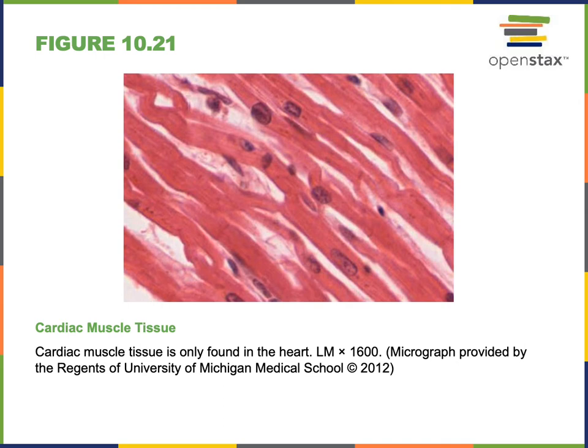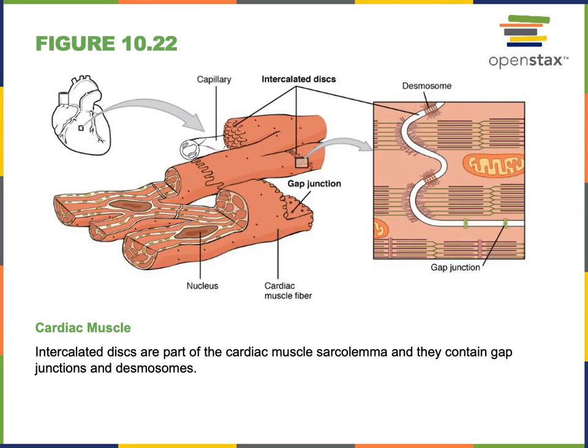Cardiac muscle is located in the walls of the heart. Cardiac muscle tissue consists of branching striated cells called cardiomyocytes. Each has a central round nucleus, and cardiomyocytes form cell junctions known as intercalated discs. Intercalated discs contain desmosomes and gap junctions.